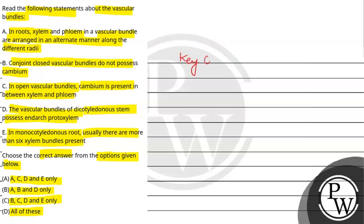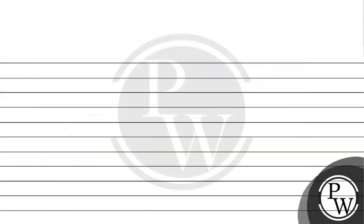So the key concept for this question is vascular bundles. Xylem and phloem together constitute the vascular bundles. In dicot stems, cambium is present between xylem and phloem.